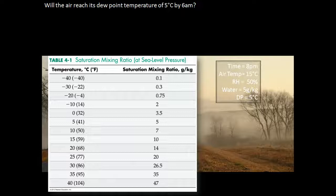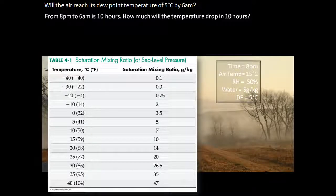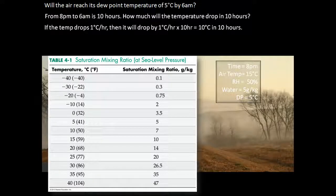The question, then, is: will the air reach its dew point temperature of 5 degrees Celsius by 6 AM? From 8 PM to 6 AM is 10 hours. How much will the temperature drop in 10 hours? If the temperature drops 1 degree Celsius per hour, then it will drop by 1 degree Celsius per hour times 10 hours, which equals 10 degrees Celsius in 10 hours.